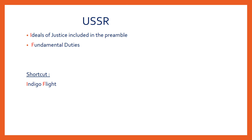The former USSR, now Russia, gave the idea of ideals of justice included in the preamble, and fundamental duties. The shortcut to remember these features is 'Indigo flight' — I in 'Indigo' for ideals of justice included in the preamble, and F in 'flight' for fundamental duties.